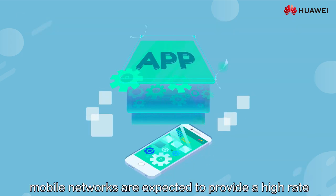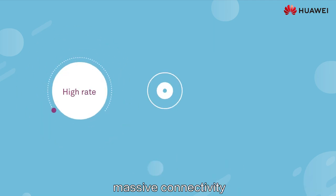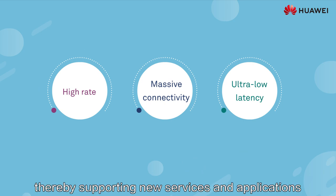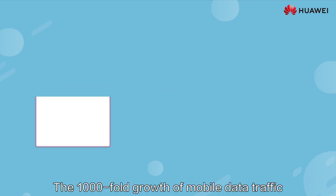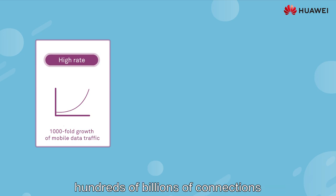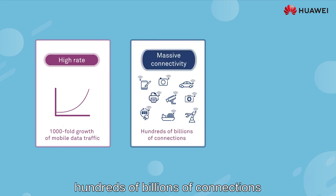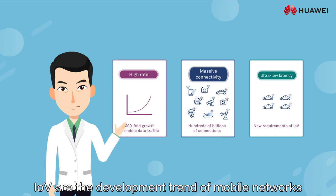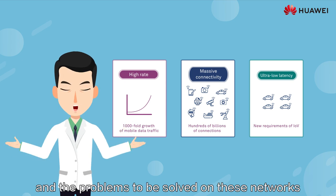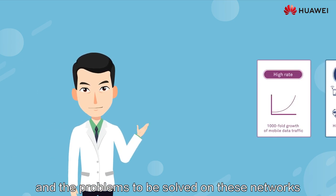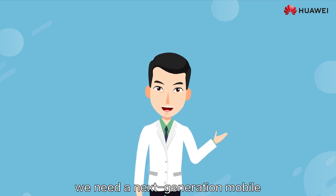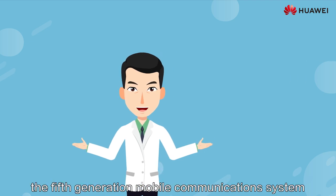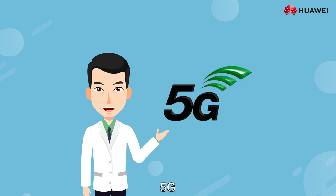To summarize, mobile networks are expected to provide high rate, massive connectivity, and ultra-low latency, thereby supporting new services and applications. The 1,000-fold growth of mobile data traffic, hundreds of billions of connections, and ultra-low latency required by the Internet of Vehicles are the development trends of mobile networks and the problems to be solved. Facing these service development trends, we need a next-generation mobile communications network – the fifth-generation mobile communications system, or 5G.